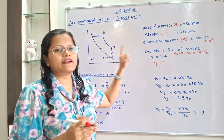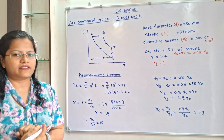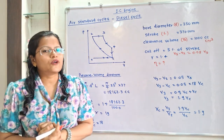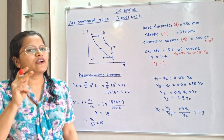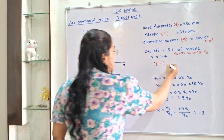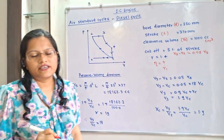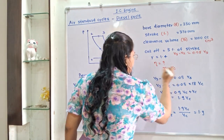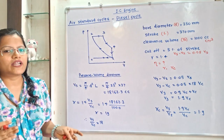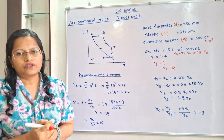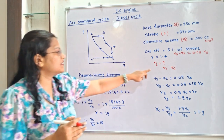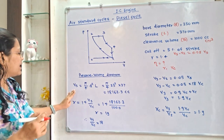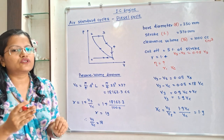For the diesel cycle, to calculate the air standard efficiency we require two parameters: the first parameter is compression ratio R, and the second parameter is Rc, which is known as the cut-off ratio. To find Rc, we first have to calculate Vs, the stroke volume.